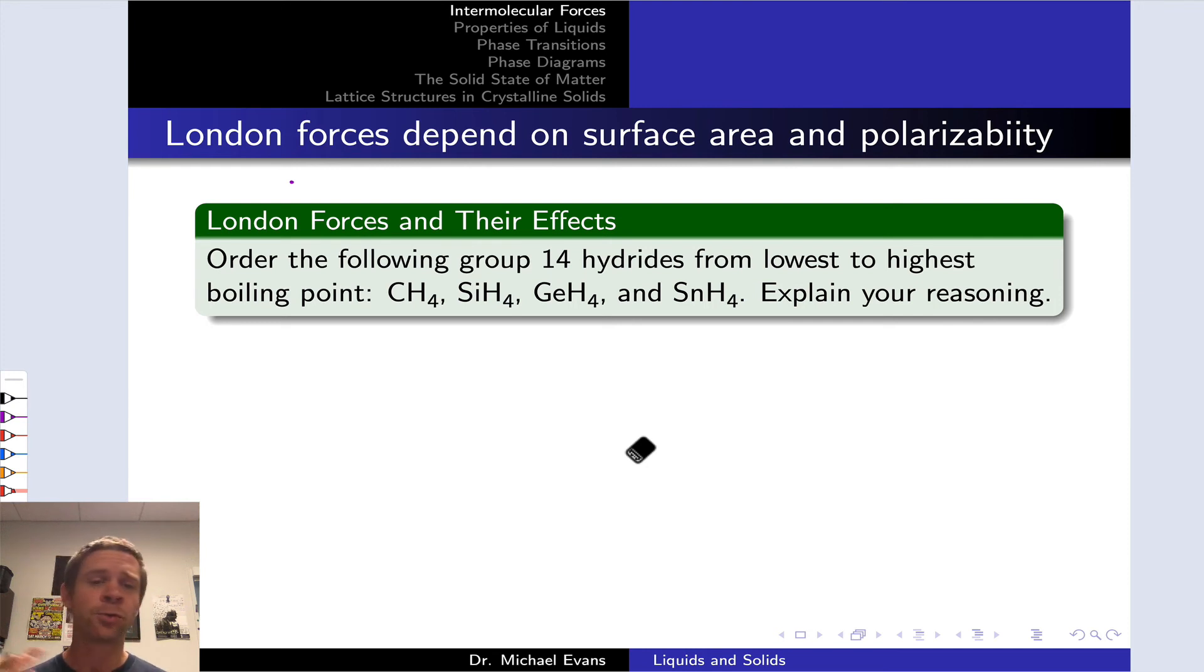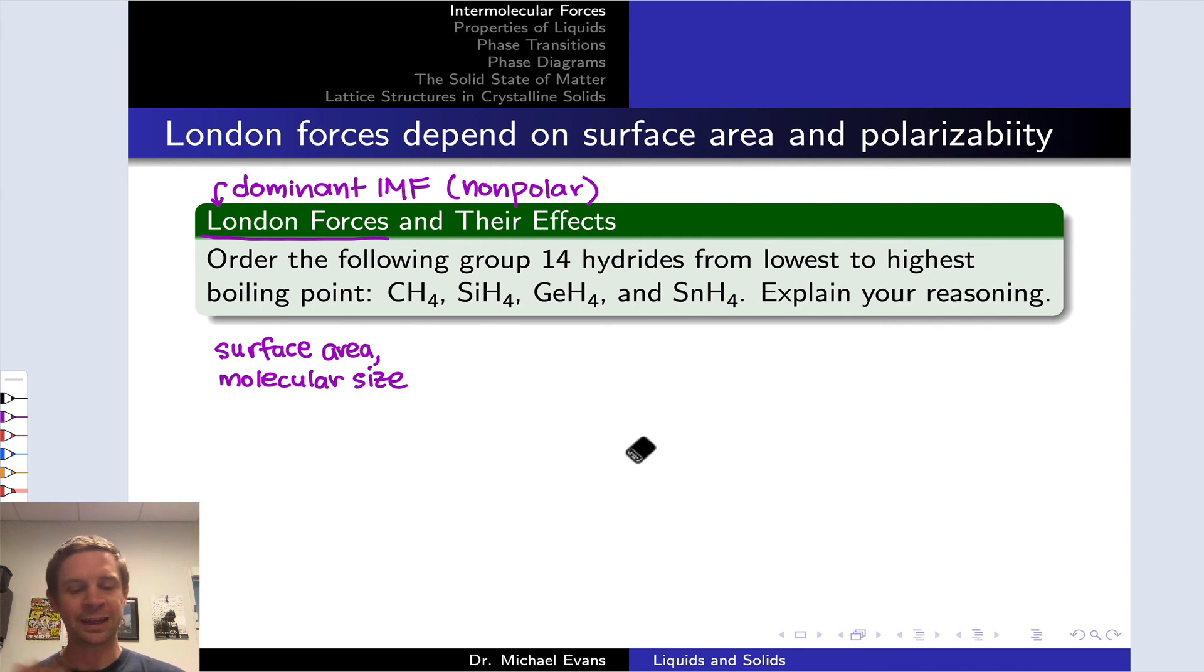Here, we've got CH4, SiH4, GeH4, and SnH4. All of these are nonpolar molecules. They're all tetrahedral. They all have no dipole moment. All things we could determine based on things we've already talked about. So we can deduce from that that the dominant intermolecular force in these molecules must be London forces. Knowing that, we want to order the compounds then on the dimension that is related to their difference in the strengths of London forces. The key difference here then is the size of the molecules. And via their surface area, this is going to have an impact on the London forces. So let's order the molecules from smallest to largest.